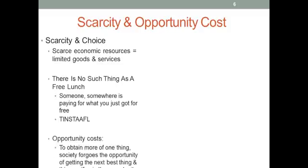And opportunity costs: to obtain more of one thing, society forgoes the opportunity of getting the next best thing. And this is the opportunity cost of the choice — it's the next best thing that you could get. So you want this one thing; what is the second option that you would give up in order to get that one thing? That's what opportunity cost is.